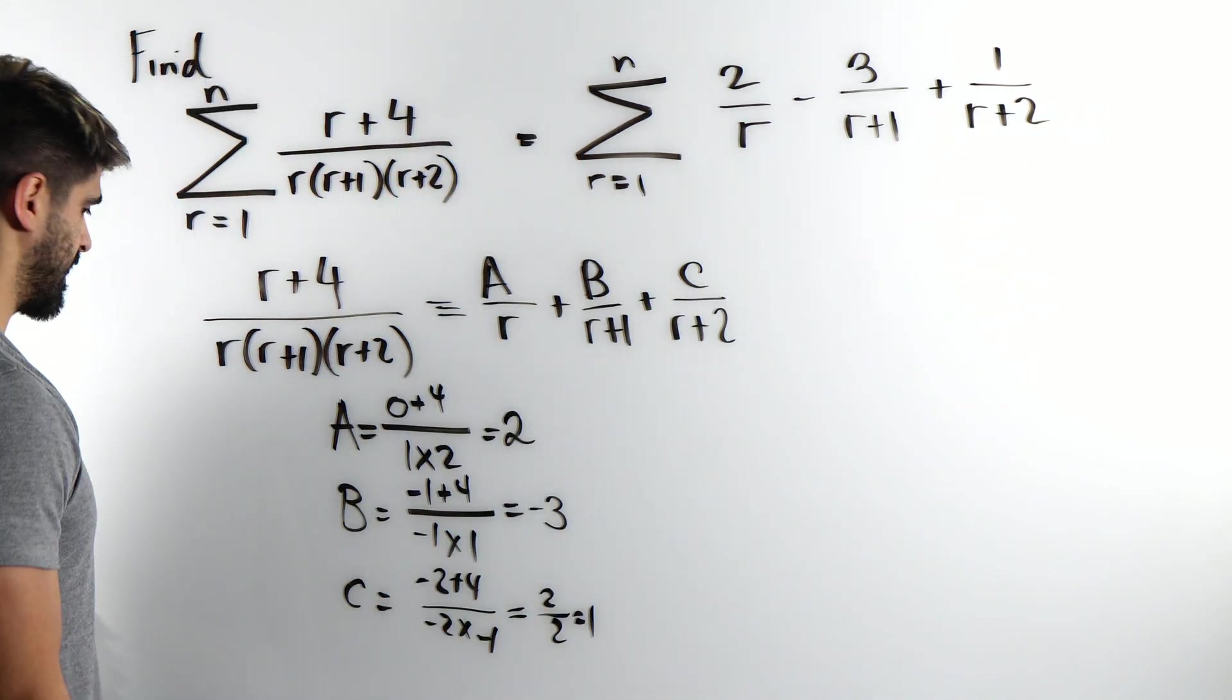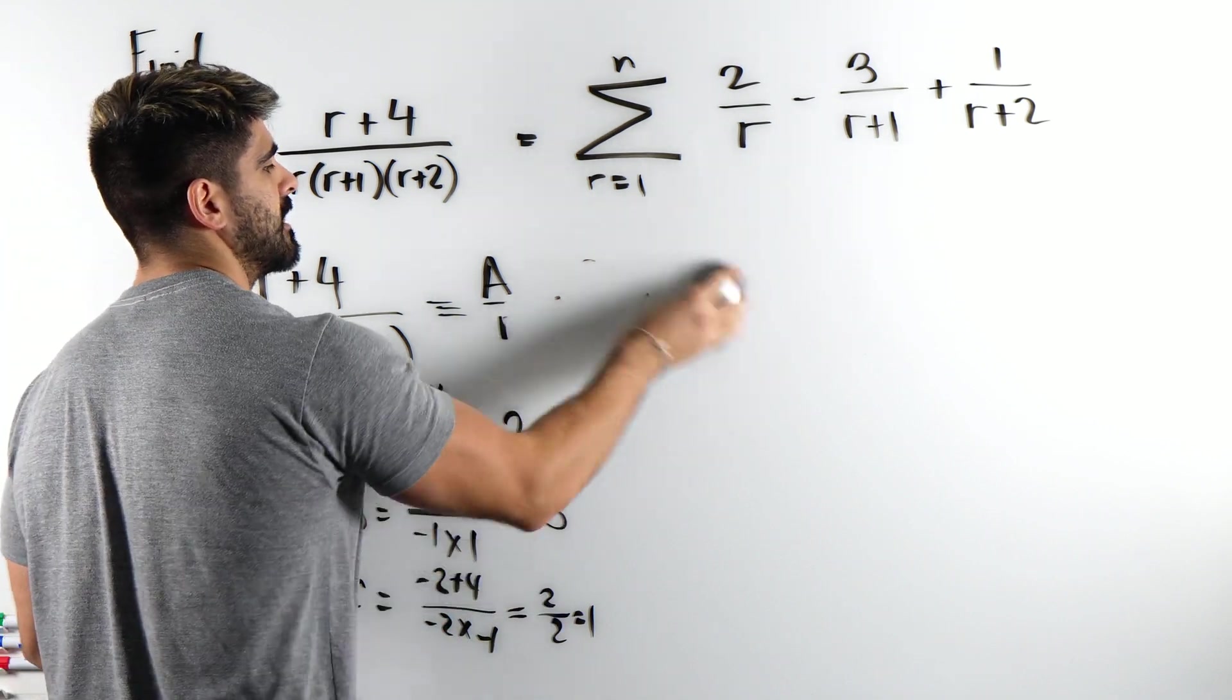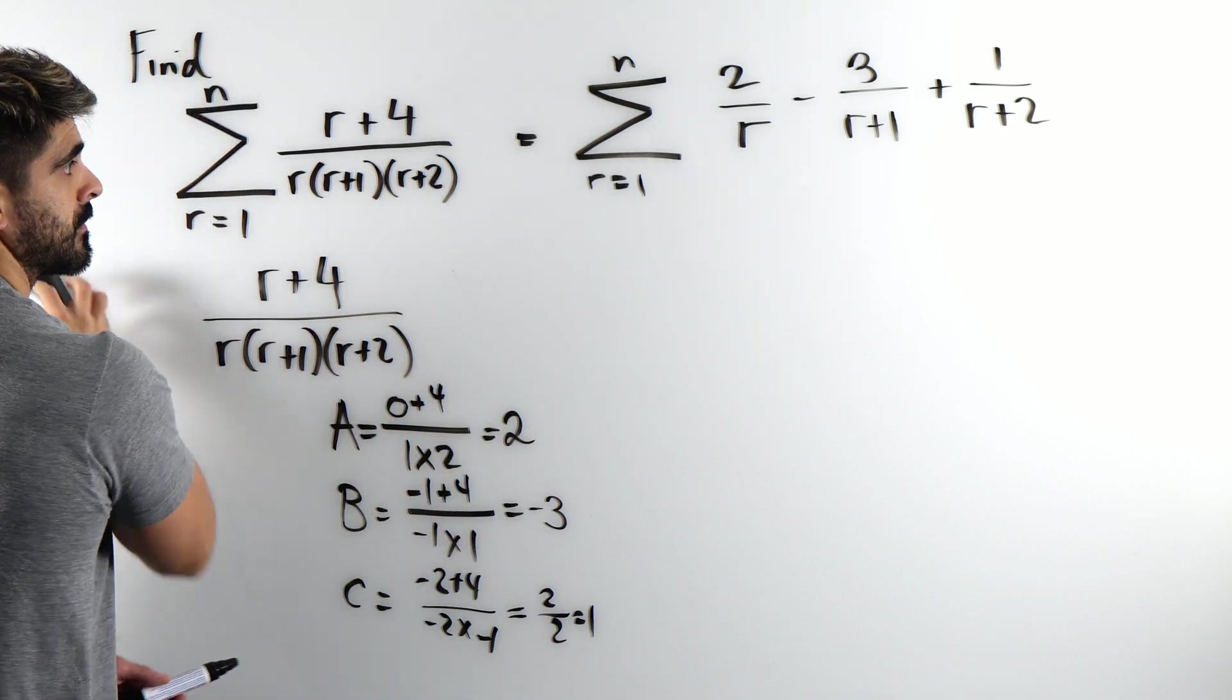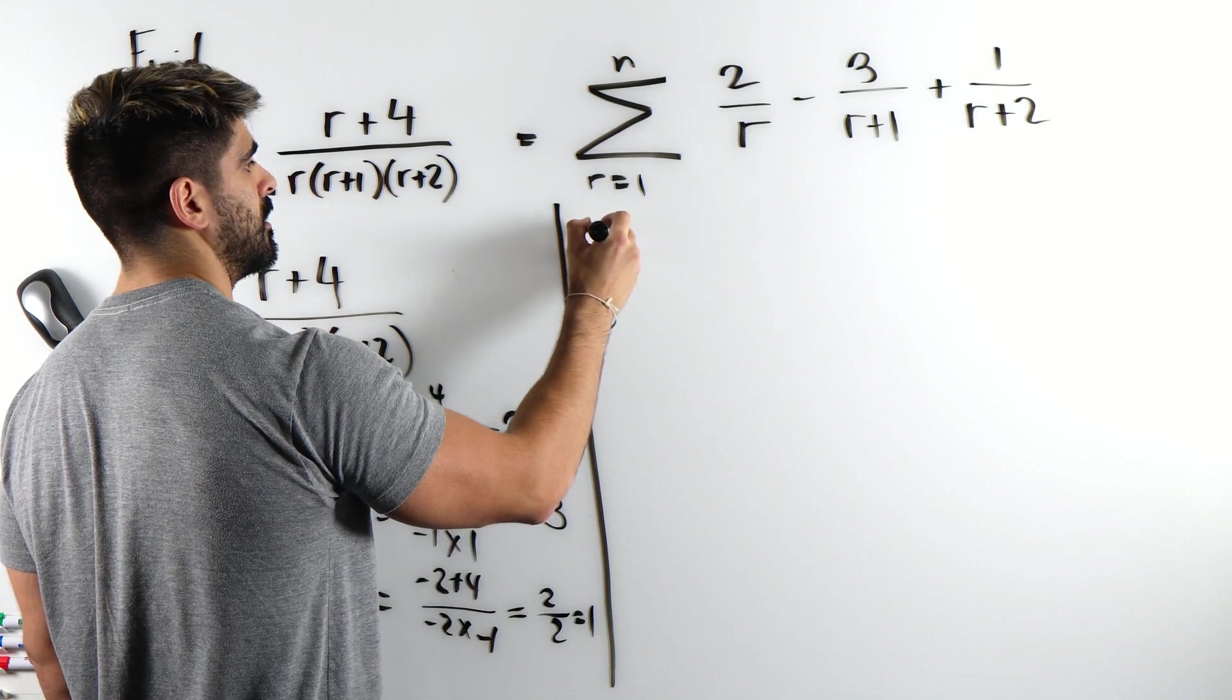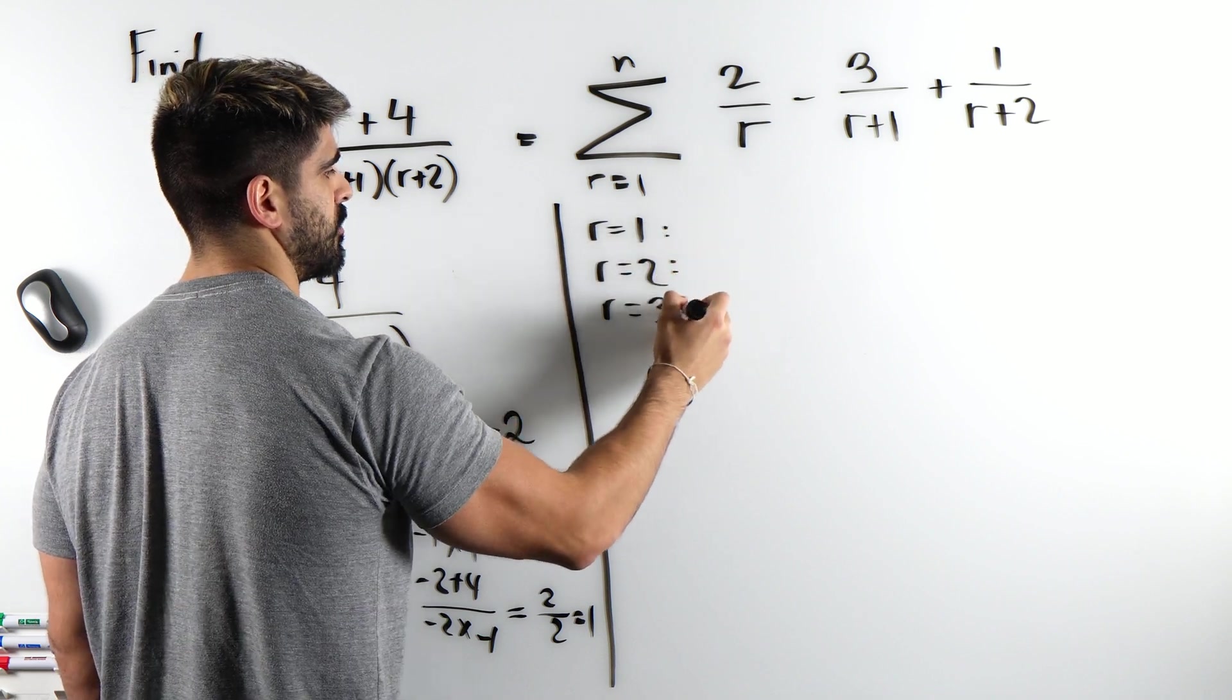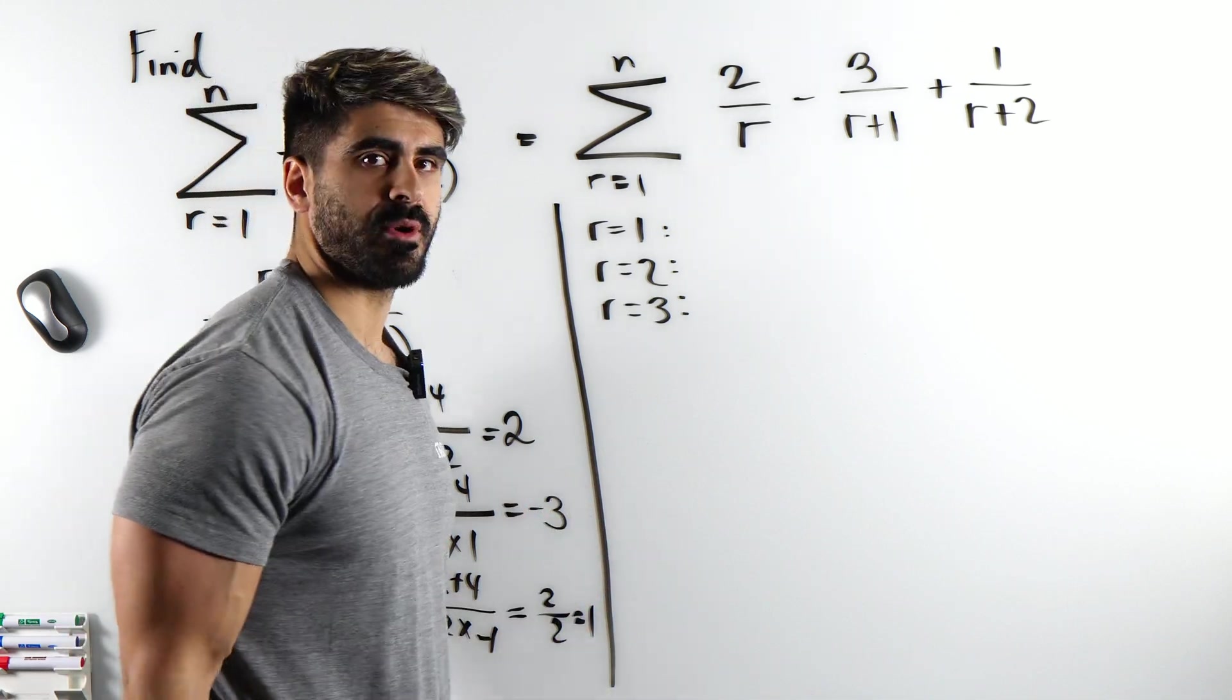Now we can apply the method of differences by subbing in our values. So let's do that. We're going to sub in r is 1, r is 2, r is 3. I usually just go up to 3 just to see what happens in it. Now don't simplify things, just keep it simple. I'm going to simplify the denominators but that's it.